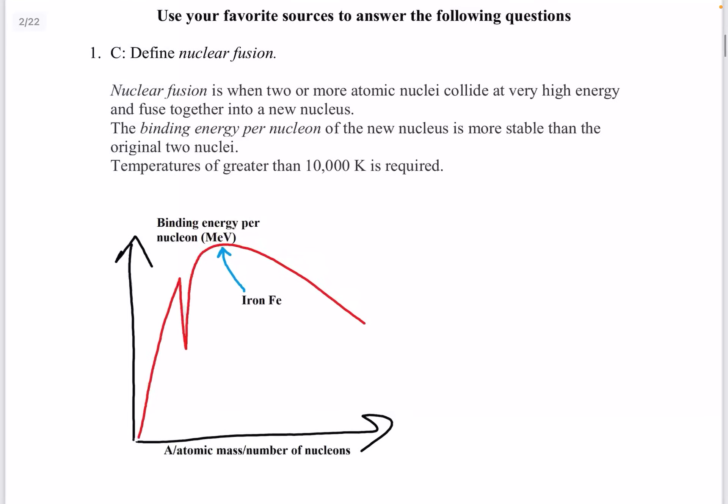Question 1. Define nuclear fusion. Nuclear fusion is when two or more atomic nuclei collide at very high energy and fuse together into a new nucleus. The binding energy per nucleon of the new nucleus is more stable than the original two nuclei. Temperatures of greater than 10,000 kelvin is required.